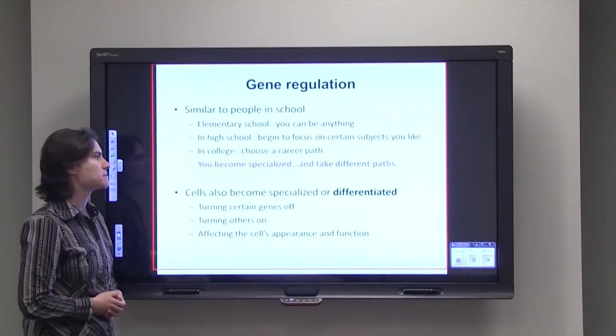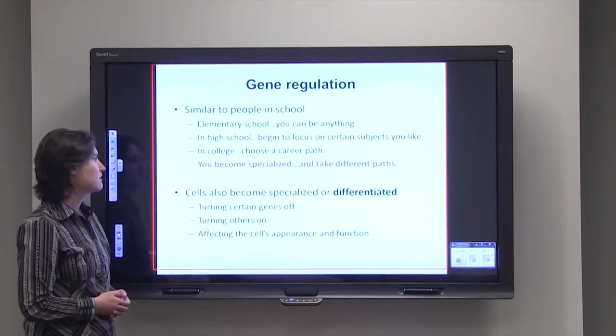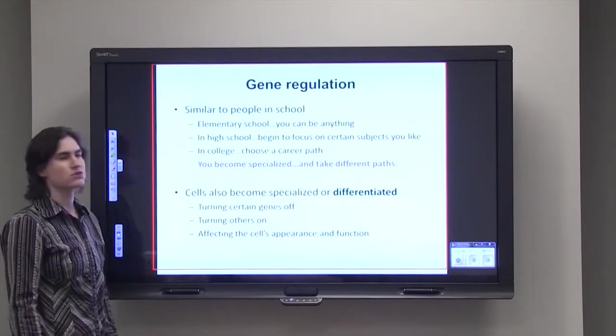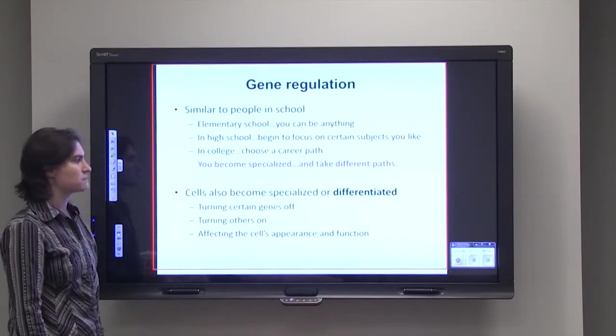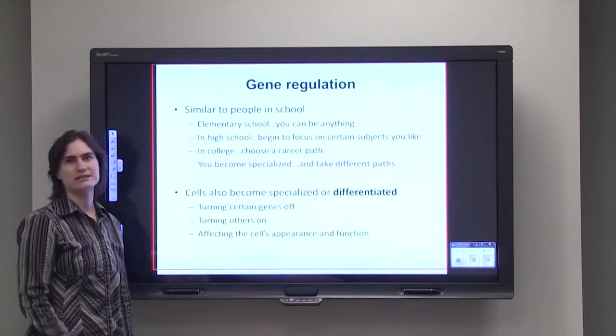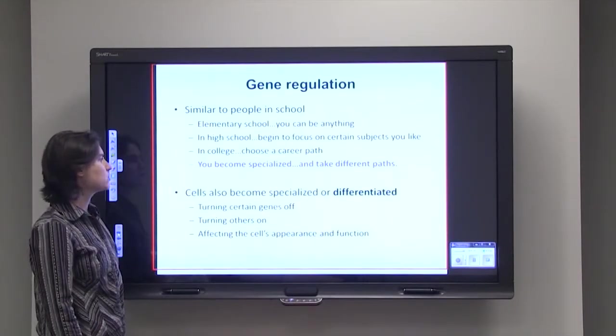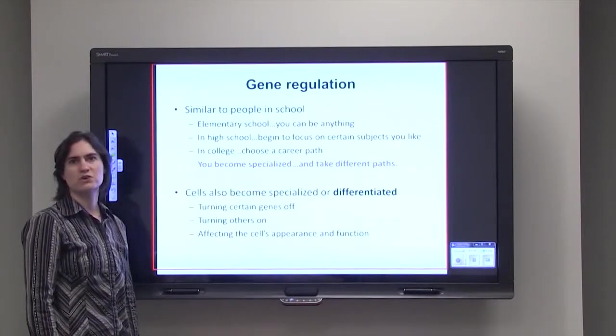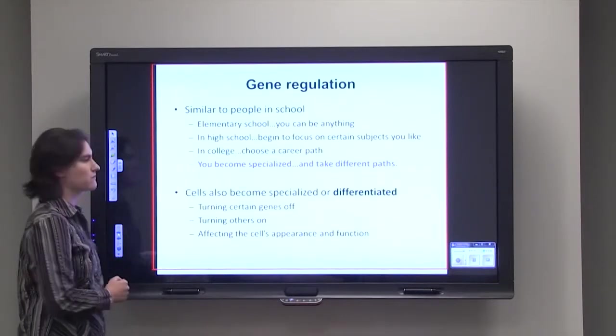Cells can also become specialized or differentiated. They can turn certain genes off, they can turn others on, and they can affect the cell's appearance and function. So cells can have absolutely identical DNA, but depending on which genes are turned on and which genes are turned off, they can appear and function very differently.